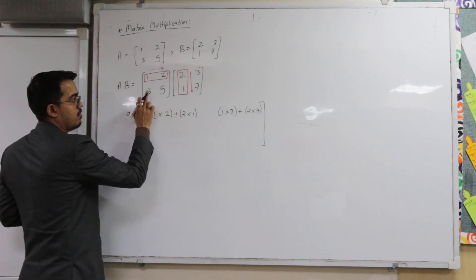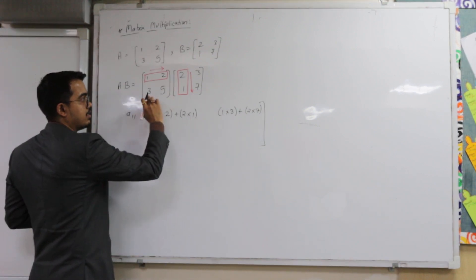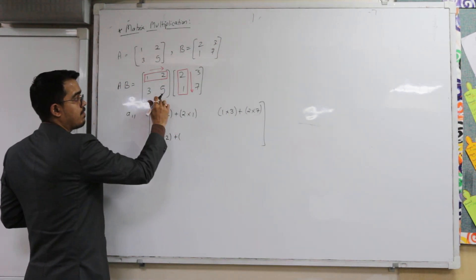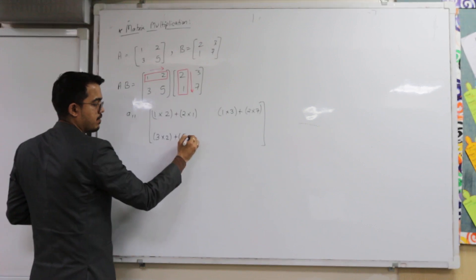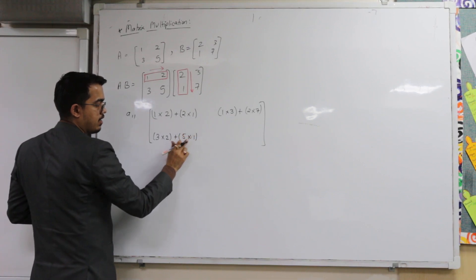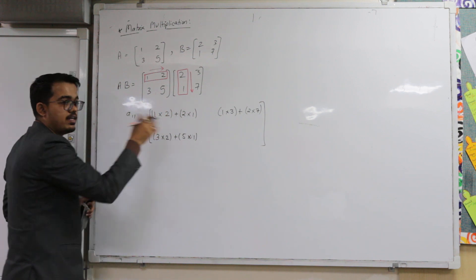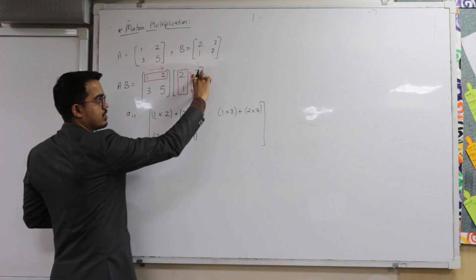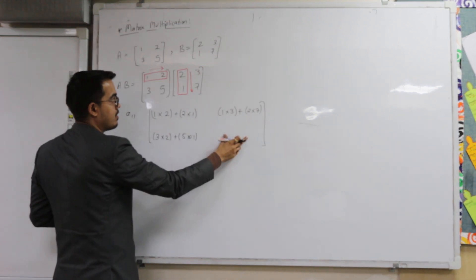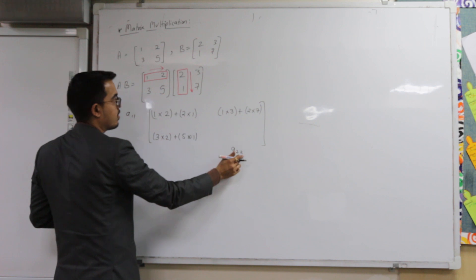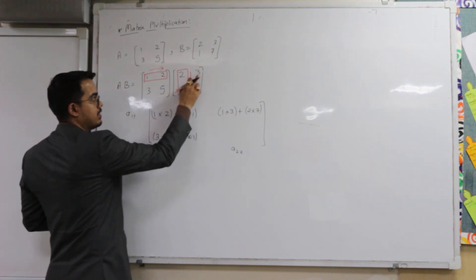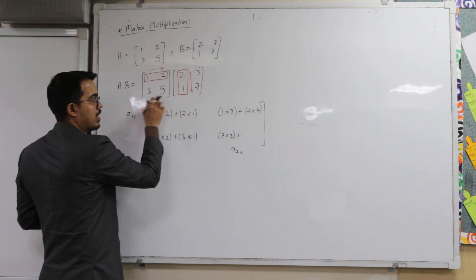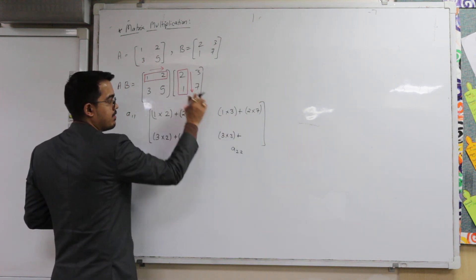Now I will move to the second row and add the answers in the second row. Second row, first element: first column first element — 3 multiplied by 2 plus 5 multiplied by 1. In the row you move right-hand side; in the column you move downwards. Similarly for the second row, second column, element A22: I will multiply 3 with 3 and add, moving right and downwards, then multiply 5 with 7.